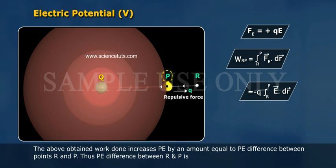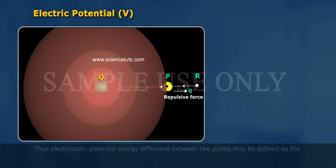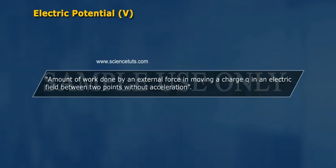Thus PE difference between R and P is delta U equals UP minus UR equals WRP. Thus electrostatic potential energy difference between two points may be defined as the amount of work done by an external force in moving a charge q in an electric field between two points without acceleration.